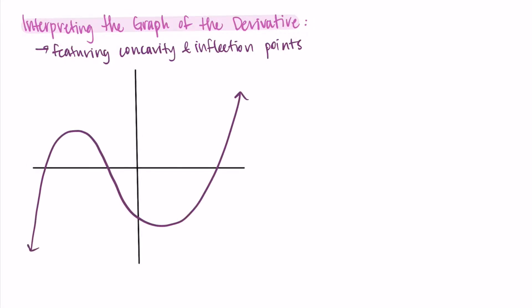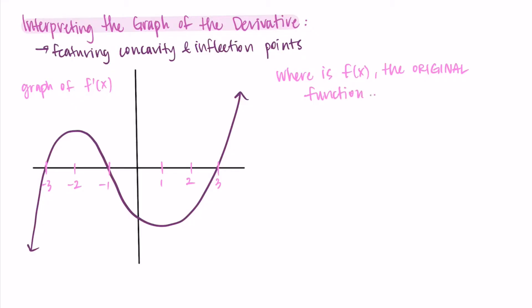Let's start with a graph. This is the graph of the derivative f'(x), and I'll label some points to help us out. We're going to ask a bunch of questions about the original function f based on this graph of its derivative. To review some old concepts, let's first talk about where the original function is increasing, decreasing, has a local max and a local min, based on the graph of the derivative. Why don't you pause and try to find this information on your own.